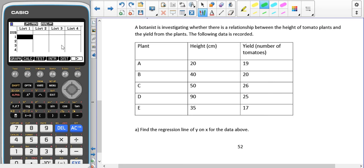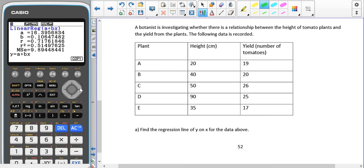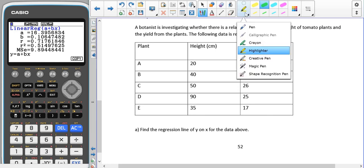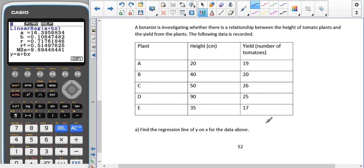First, we have to find the regression line. In our calculator, we type in these values: 20, 40, 59, 35, and then the yields in list 2: 19, 20, 26, 25, and 17. We go to calc, reg, a plus bx. The equation for our regression line is y equals 16.4 plus 0.106x.